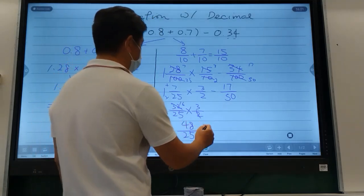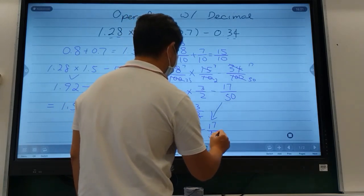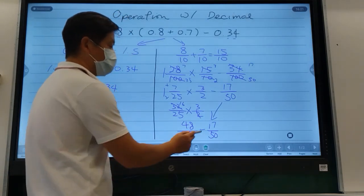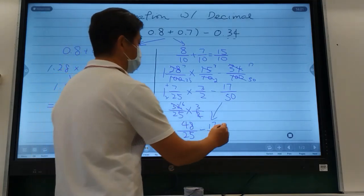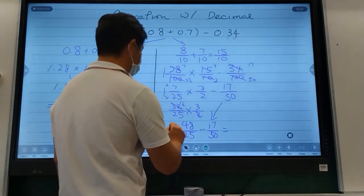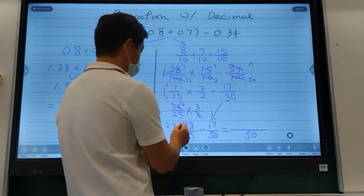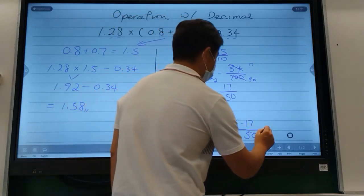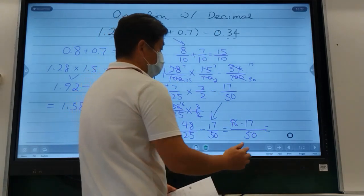Now I've got to minus, bring this back down, minus 17 over 50. Notice I have 25 and 50 for my denominator, so my common denominator should be 50. This one times 2, so 48 times 2 is 96 minus 17, which equals 79 over 50.